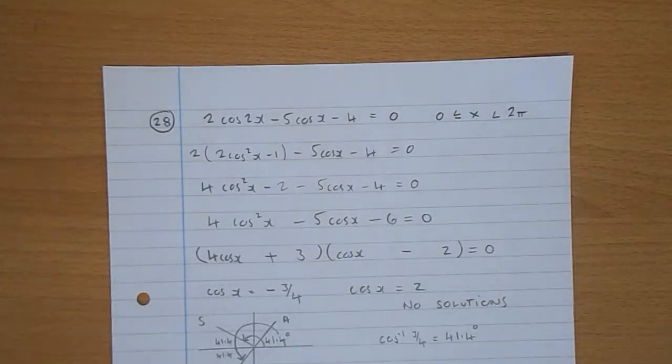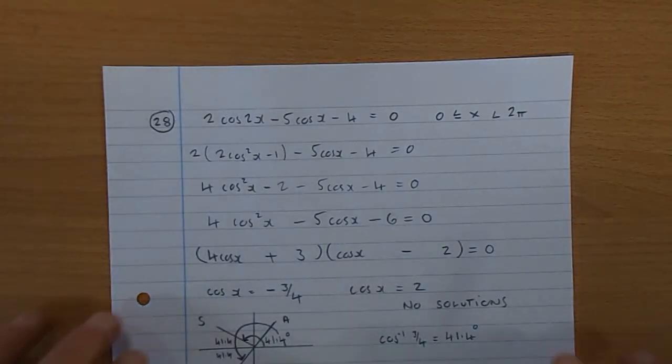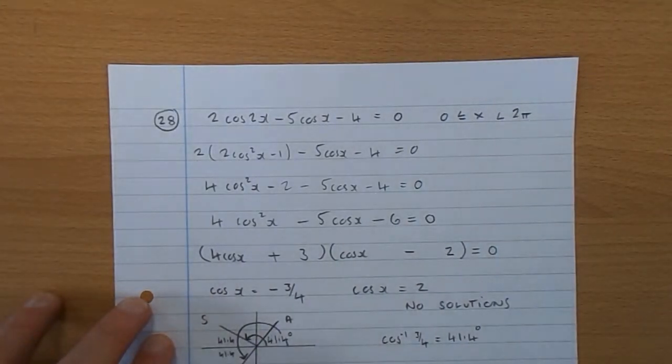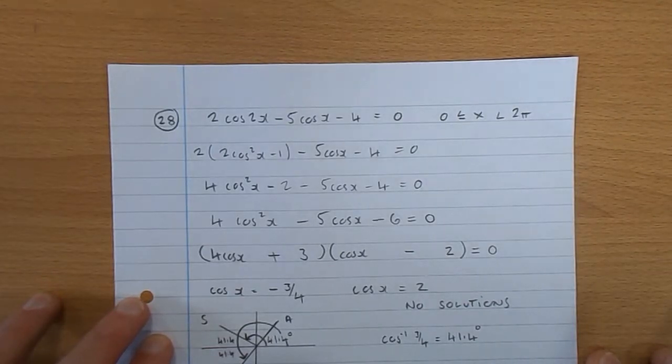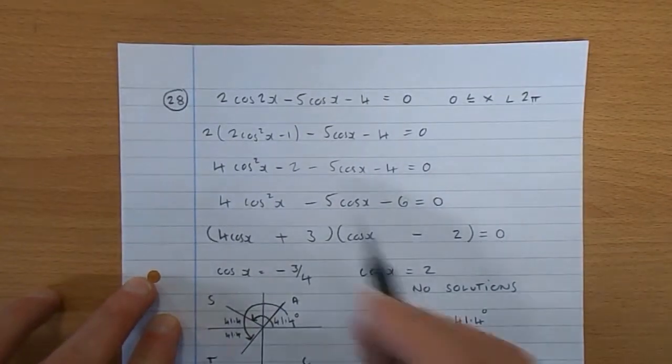Added complication that x has to be between 0 and 2π. You're allowed 0, you're not allowed 2π. I'll solve these in degrees and then put my final answer into radians, which is the complication at the end.